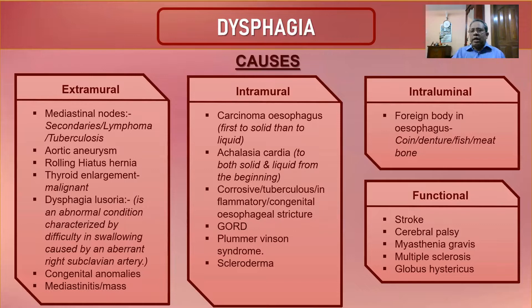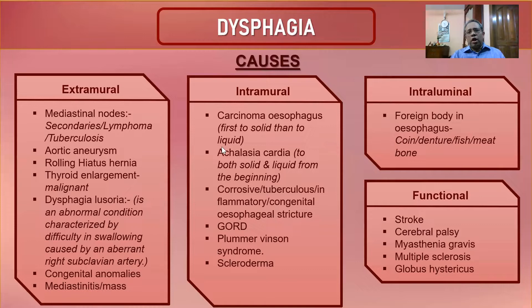Intramural causes — where the lesion lies in the esophageal wall — most commonly include carcinoma of the esophagus. The characteristic dysphagia pattern is initially for solid food, then progressing to liquids. This progressive pattern from solid to liquid is the hallmark presentation of esophageal carcinoma.